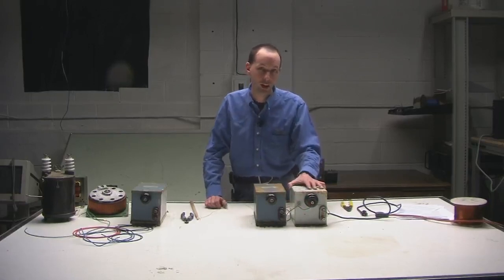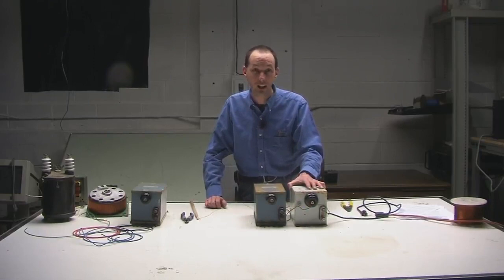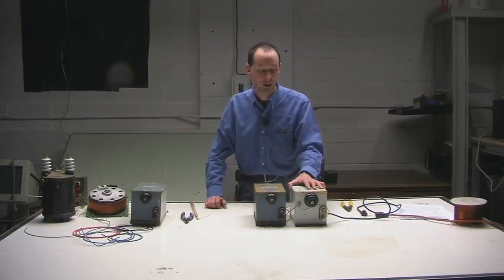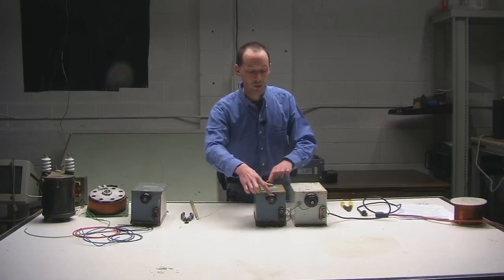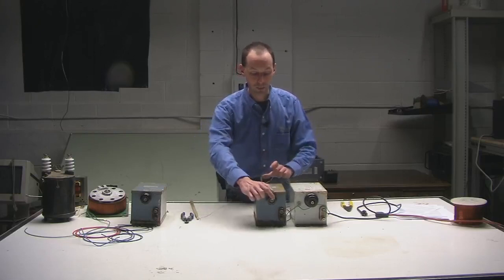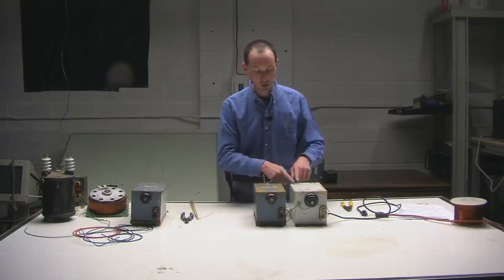This is because neon sign transformer manufacturers are cheap bastards and they like to cut costs. And it's a lot easier to make a box insulated for 6,000 volts than it is to do it for 12. So you know these two are out of phase to each other. So are these two, but they can be flipped.